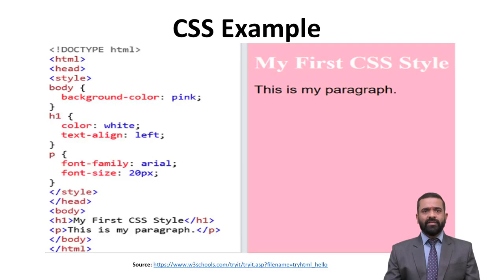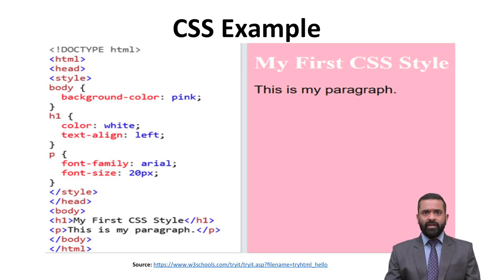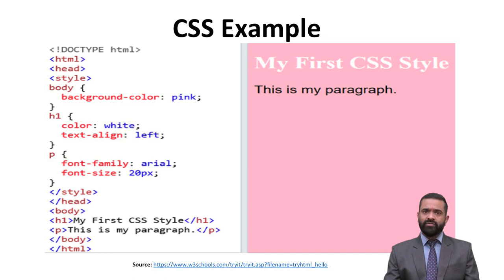Here we have a CSS example. Inside the HTML head section with a style tag, we set the background color as pink, the h1 heading color as white, and text-align as left. For the paragraph, font-family is Arial and font-size is 20 pixels. In the body, h1 reads 'My First CSS Style' and the paragraph reads 'This is my paragraph'.